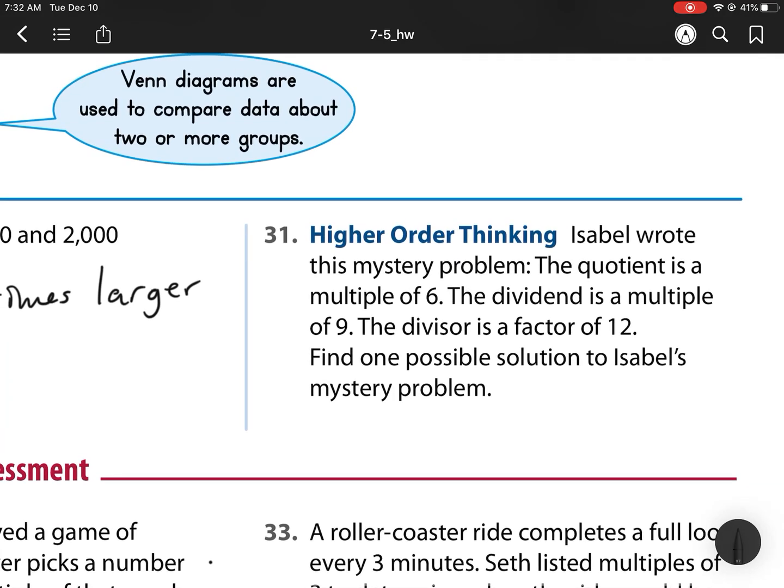For 31, Isabelle wrote this mystery problem. The quotient. So, remember, quotient is a division answer. The quotient is a multiple of 6. The dividend. So, let's just start since we're using all those words. We have quotient here, dividend, and, oops, there's a misspelling there, and we have divisor.